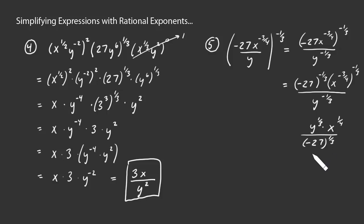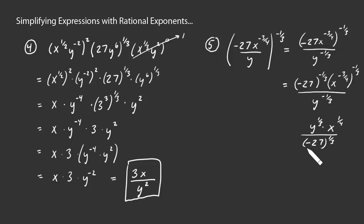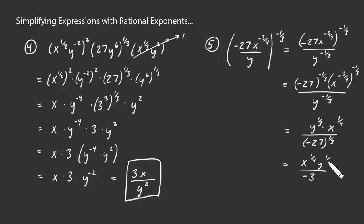There's not much more we can do with y to the 1 third and x to the 1 fourth. Down in the denominator, we can take the cube root: raising to the 1 over n is taking the principal nth root. The cube root of 27 is 3, and the cube root of negative 1 is negative 1, giving negative 3 in the denominator. On top we have the product of x to the 1 fourth and y to the 1 third, written in alphabetical order for aesthetics. That is the answer to our final example.